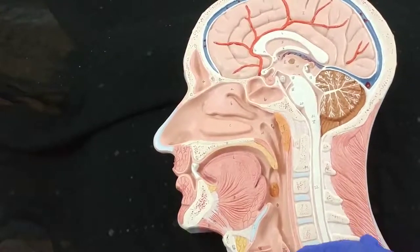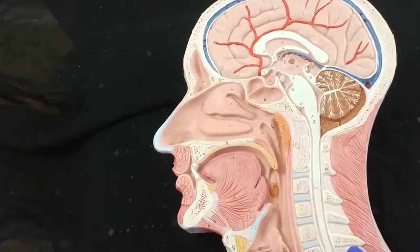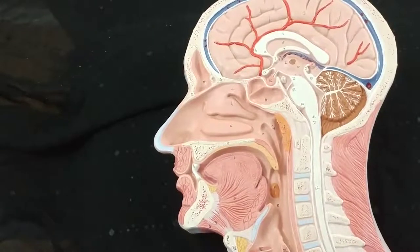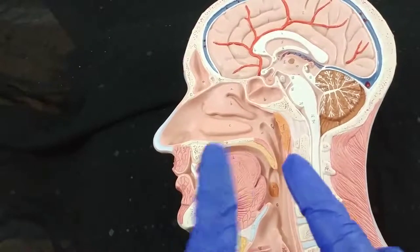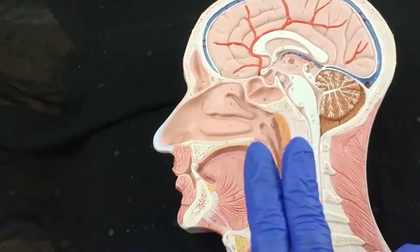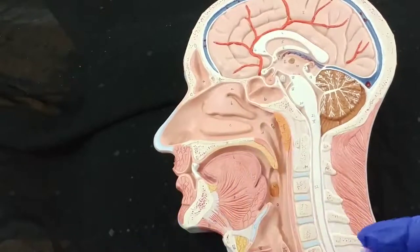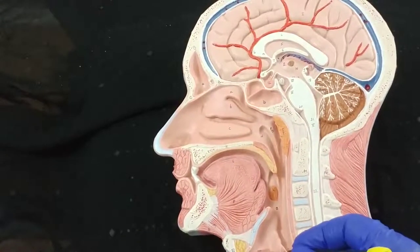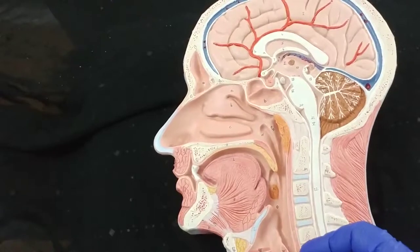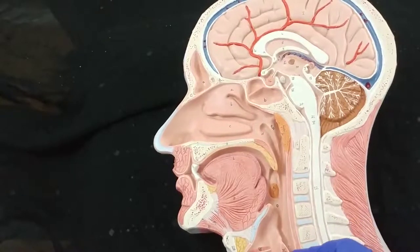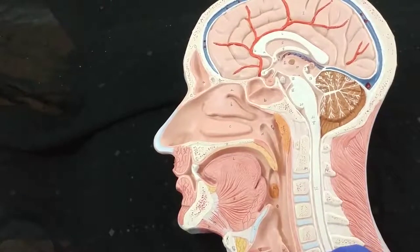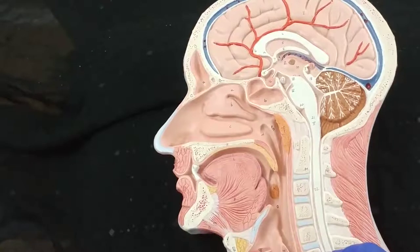In the larynx, we have the vestibular fold at the top, and below that the vocal fold. The vocal folds vibrate and we have phonation. The vestibular fold is for protection of the vocal fold. These are the true folds and they contain the vocalis muscle.